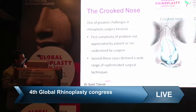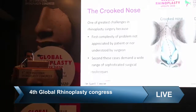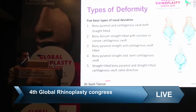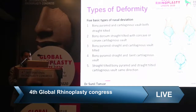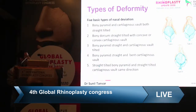In the deviated nose, the dorsum is straight but shifted from the midline. There are basically five types of deformities in the crooked nose. In type one, the bony pyramid and cartilage are both tilted. In types two, three, and four, the bony pyramid is straight but the cartilage pyramid has different deformities. In type five, the bony pyramid and cartilage are both tilted in the same direction.